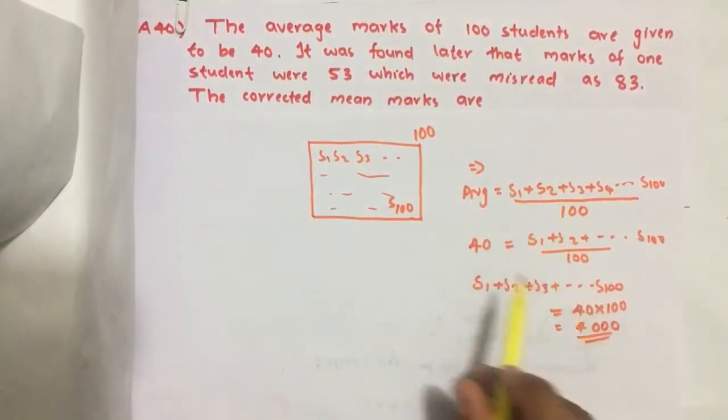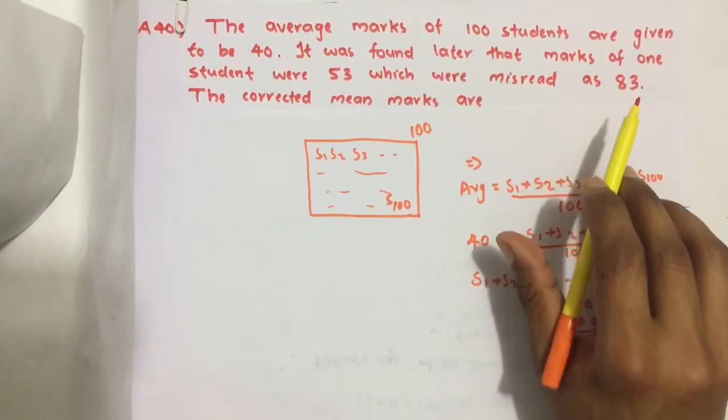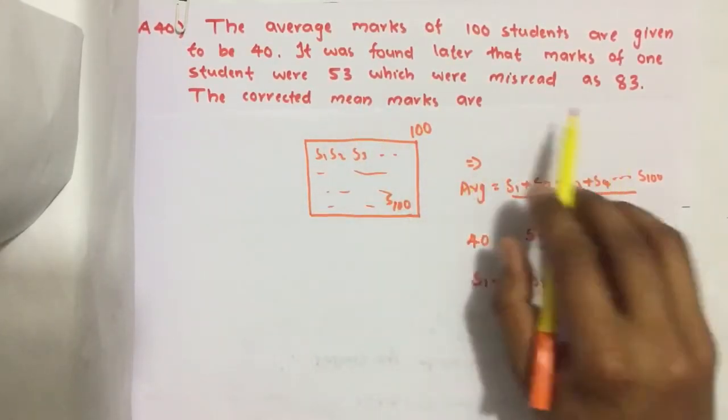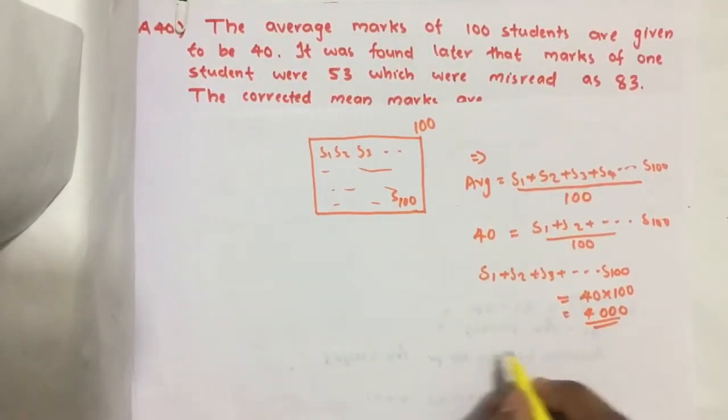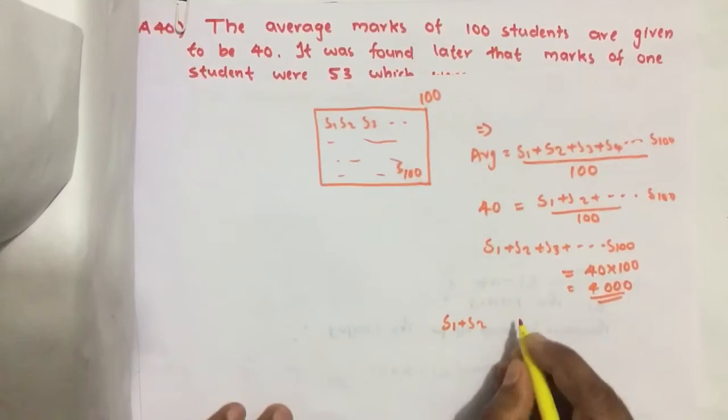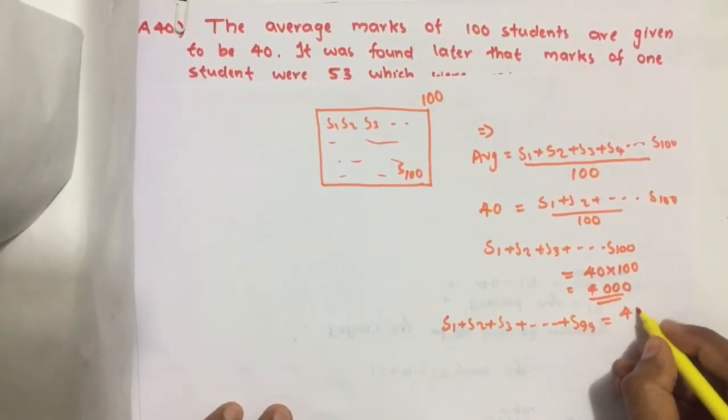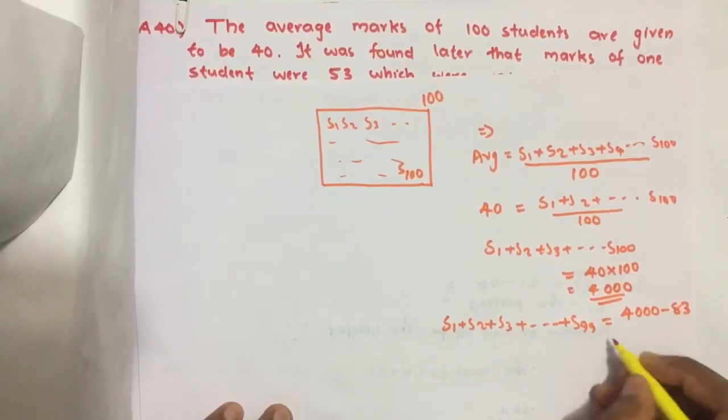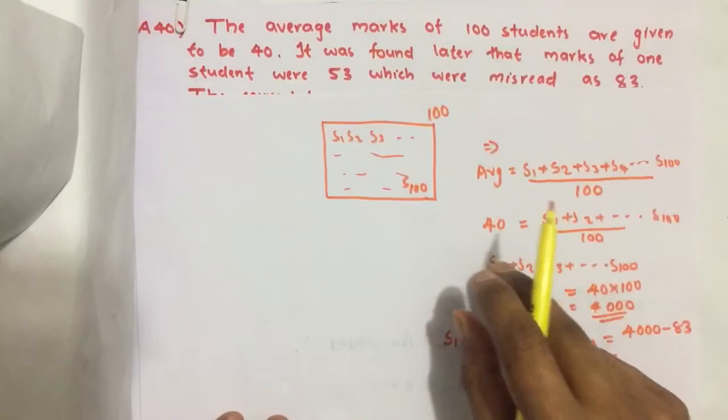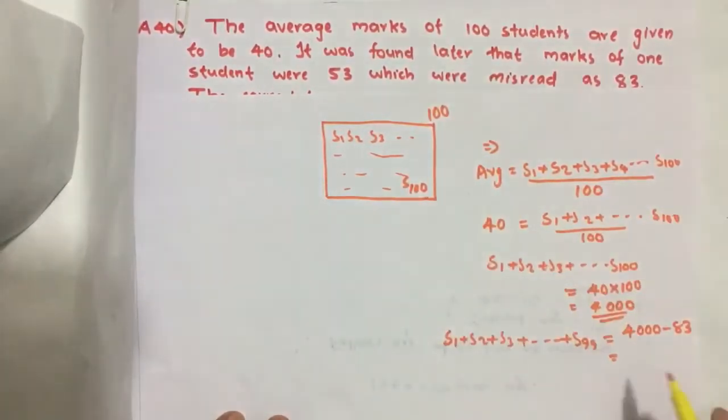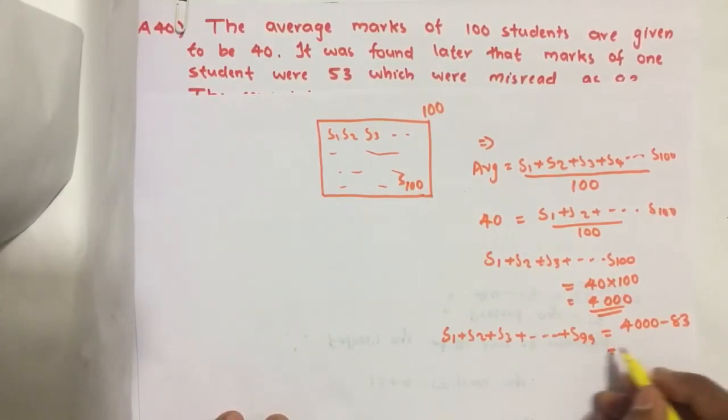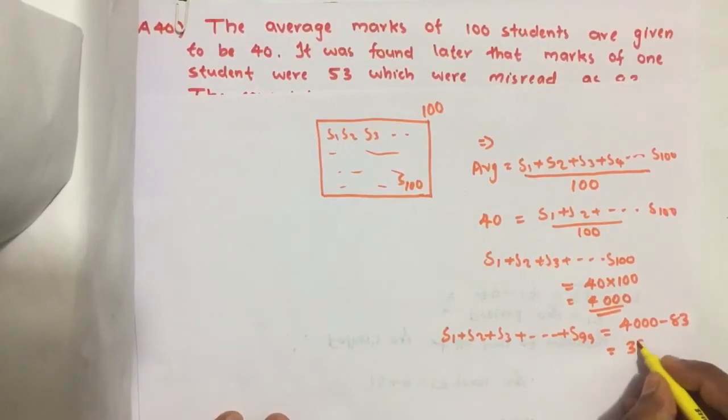So in this, there was one mistake while calculating this average. What was that mistake? Instead of 53 mark of a student, it is given as 83. So we just remove this 83 from this. S1 plus S2 plus S3... is 99, equal to 4000 minus 83. We just remove that one student whose mark is misread. So we got the mark without that student - how much? 3917.